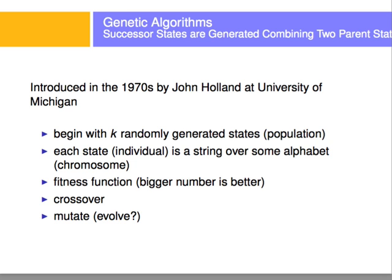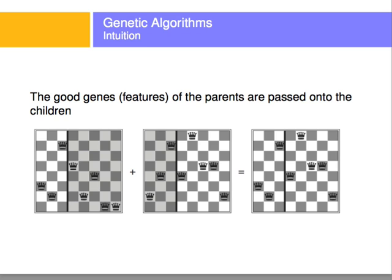Let's look at this with the example of the eight queens problem. The eight queens problem consists of placing eight queens on an eight-by-eight chess board such that no queen is attacking each other. For example, this is one state here and this is another state. The idea is that there are good features that are passed on to the children.